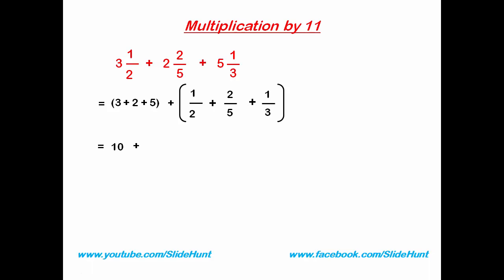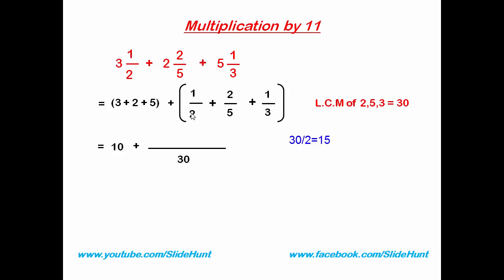I think all of you know how to add fractions. First take the LCM of the denominators. The LCM of 2, 5, and 3 is 30. So I'm going to write 30 here. Now divide: 30 by 2 is 15, and 15 times 1 is 15.